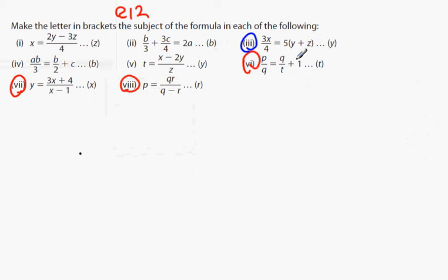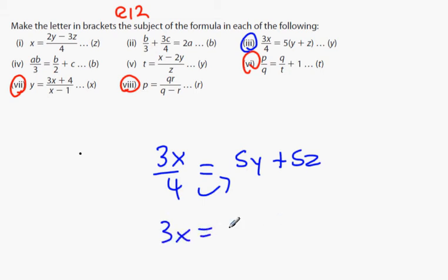Here we go guys. 3X over 4. I'm going to multiply the 5. And what we're going to get is 5Y plus 5Z. Now that that's done, I'm going to cross multiply up to 4 because I don't want the 4 there. So I'm going to get 3X equals what? 20Y plus 20Z.